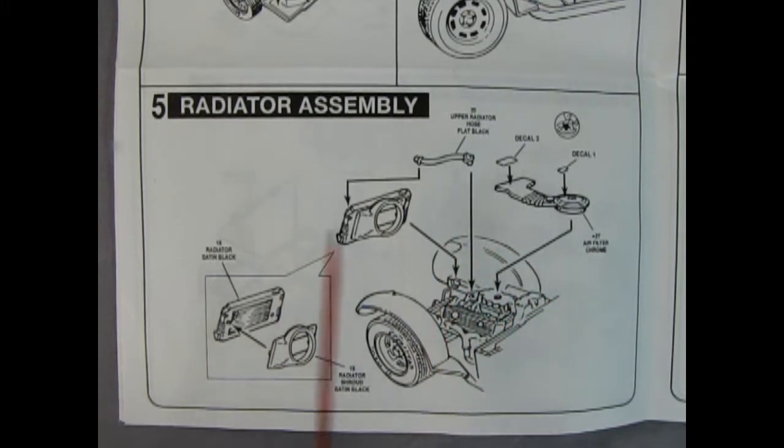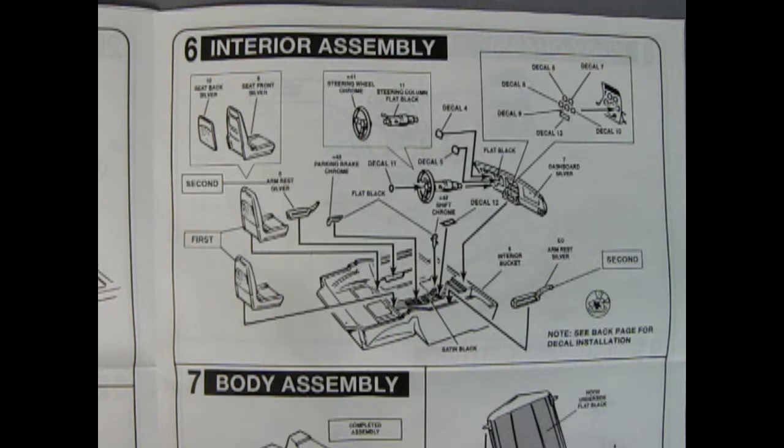Step six shows our interior being glued together. This comes in with the basic tub assembly but the nice part is you do get these wonderful armrests that glue into place as well as these two-piece bucket seats - a front and a back. You get a steering column with the steering wheel and then your dashboard and all the rest is decals.